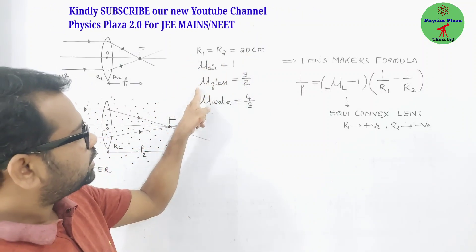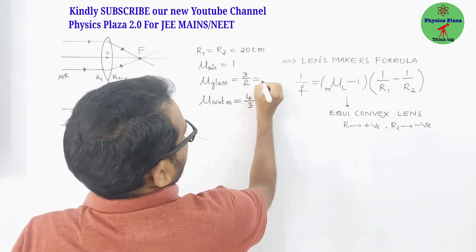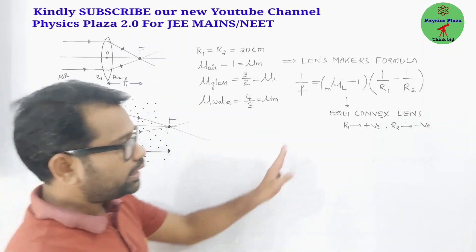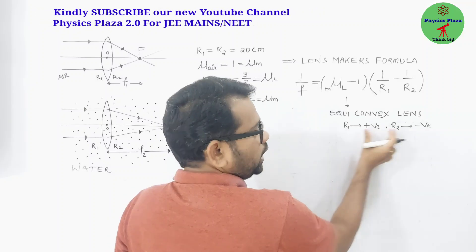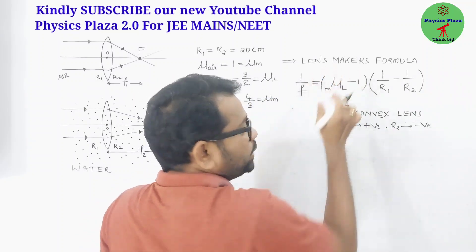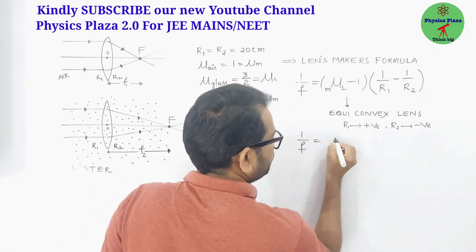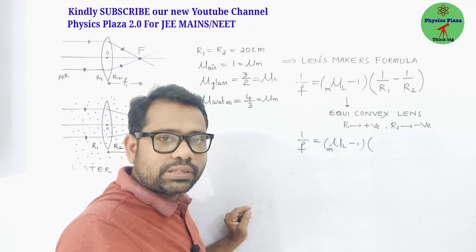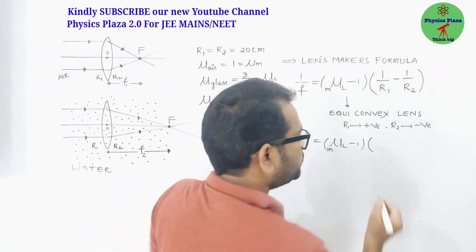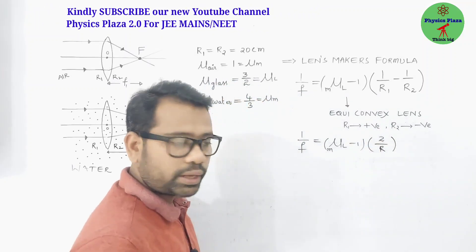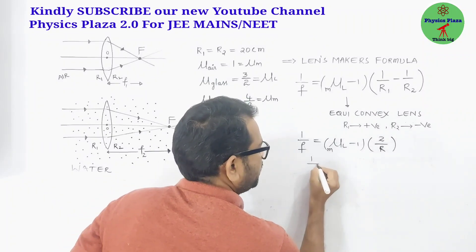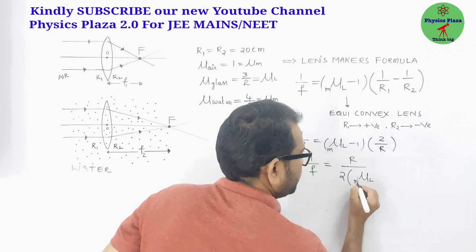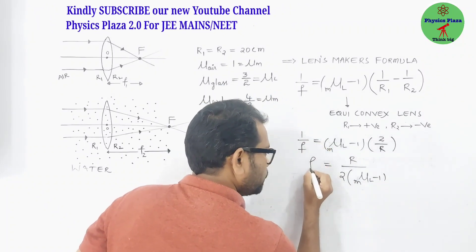The refractive index of air is 1 and the refractive index of glass (the lens) is 3/2. For an equi-convex lens, R1 = R2 = R, where R1 is positive and R2 is negative. So the lens maker's formula becomes: 1/f = (μ_L/μ_m − 1) × (2/R), which rearranges to f = R/2 × 1/(μ_L/μ_m − 1).